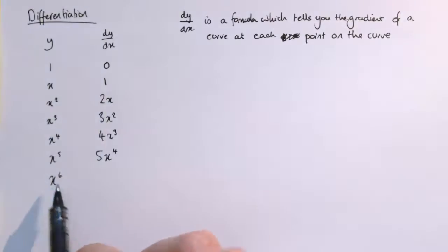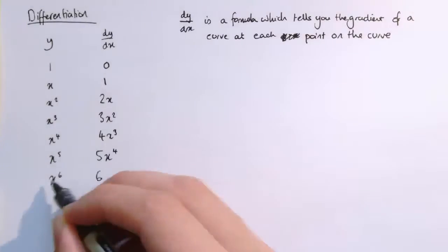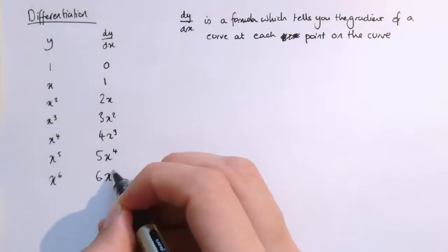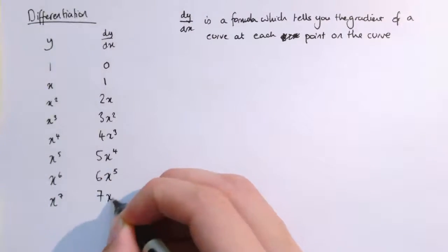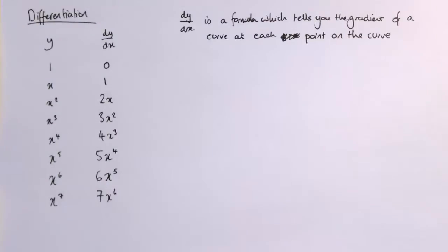And here, 2 has become 1 because x squared would be reduced the power by 1. We get x to the 1, and x to the 1 is just x. So here, the number comes out in front, and that's 6, and the 6 reduces by 1. So we get x to the 5. We could do x to the 7, and that would be 7x to the 6, and so on.